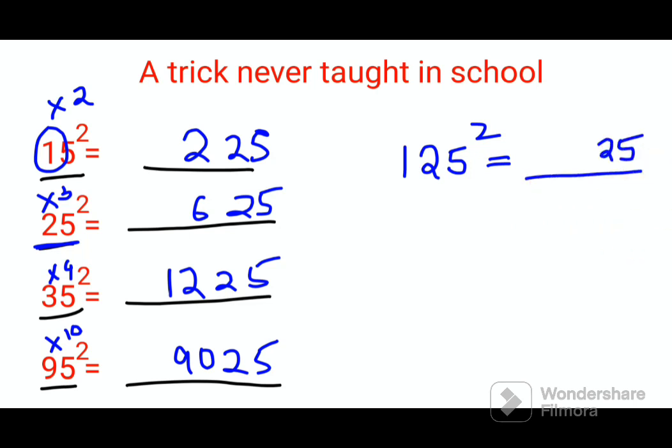Now imagine if you had 215 square. Again, things would be so much easier - just do 25 for the last part and you multiply 21 by 22. Please understand, this is so much easier than 215 into 215.